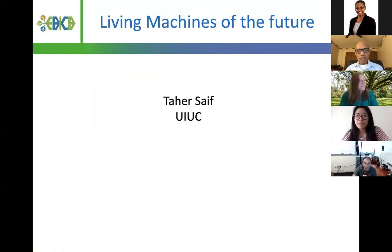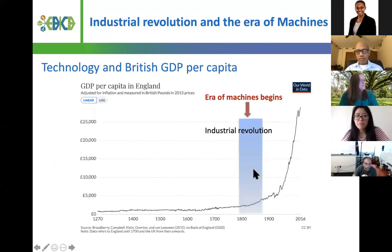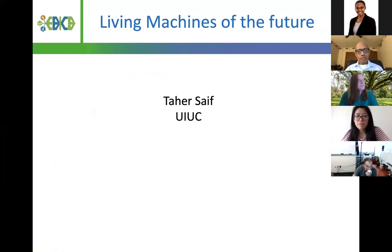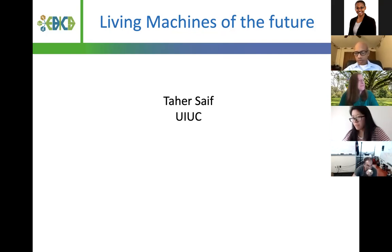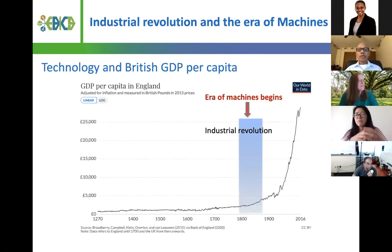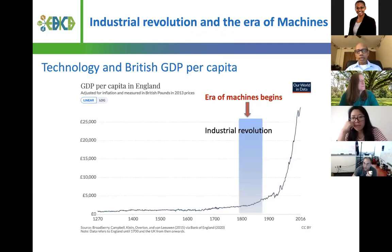Living machines of the future. I naturally had to think about where we started with machines. This is data I got from the British GDP per capita. The GDP was kind of low in terms of pounds, but then came the Industrial Revolution, starting around the 1800s, going all the way to about mid-1900s.